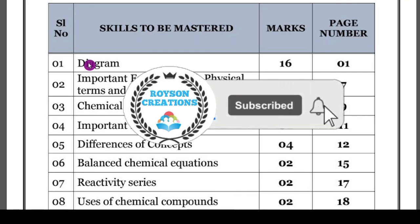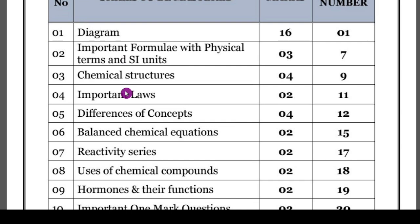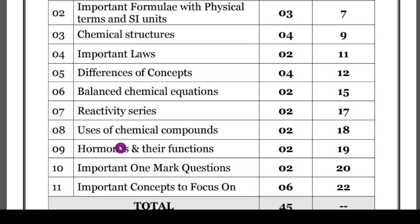Those watching for the first time, please subscribe and share with your friends. The second important concept is important formulas with physical terms and SI units, because many definitions will be asked, and when solving problems you need important formulas, physical terms, and SI units. Chemical structures are also very important because in the carbon and its compounds chapter they ask 2 to 3 marks on chemical structures — both structural formula and molecular formula. Dot diagrams are also important, as are key differences of concepts, balanced chemical equations, reactivity series, uses of chemical compounds, hormones and their functions, and important one-mark questions.